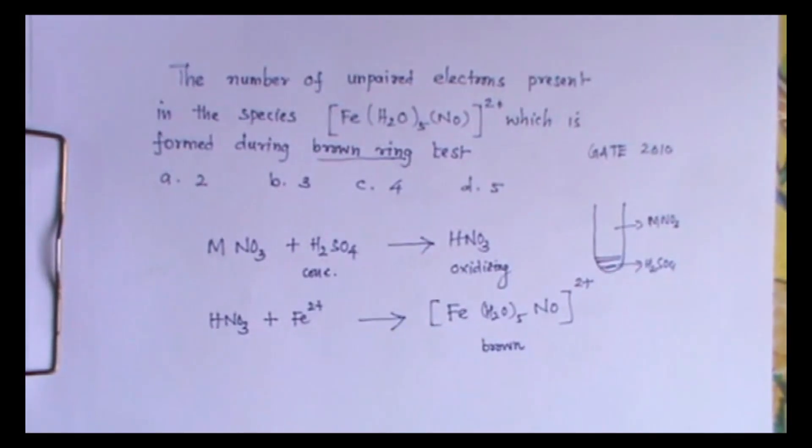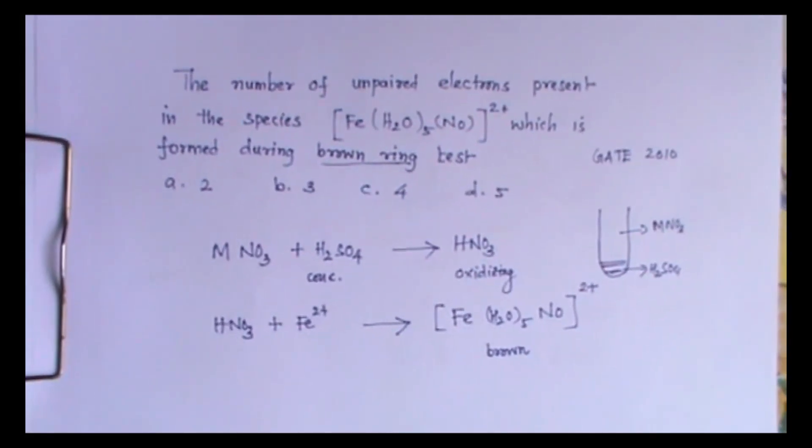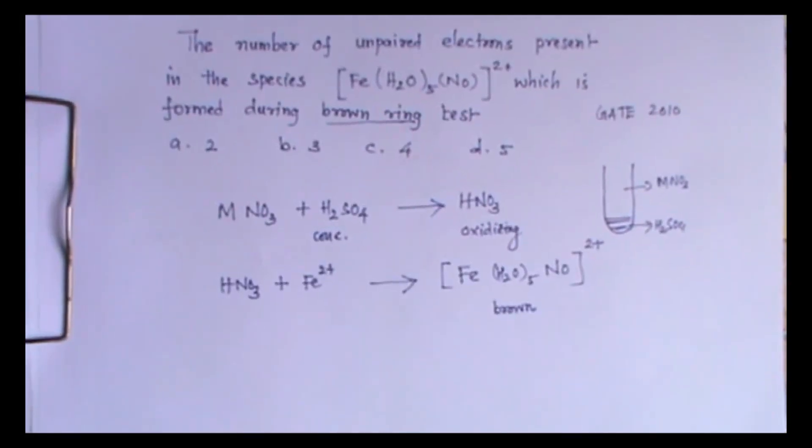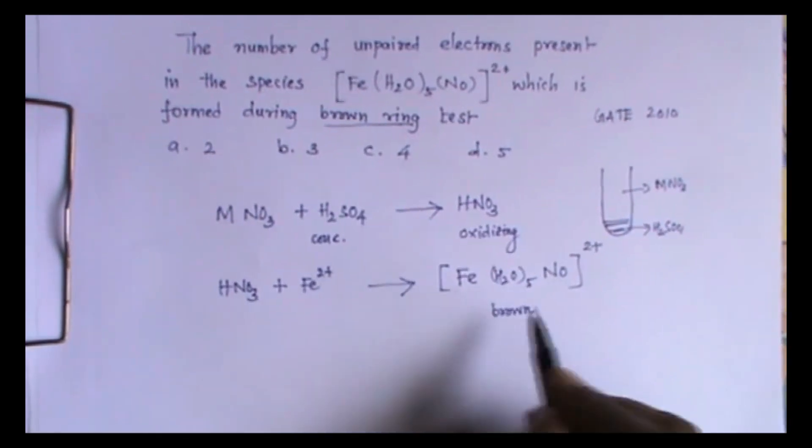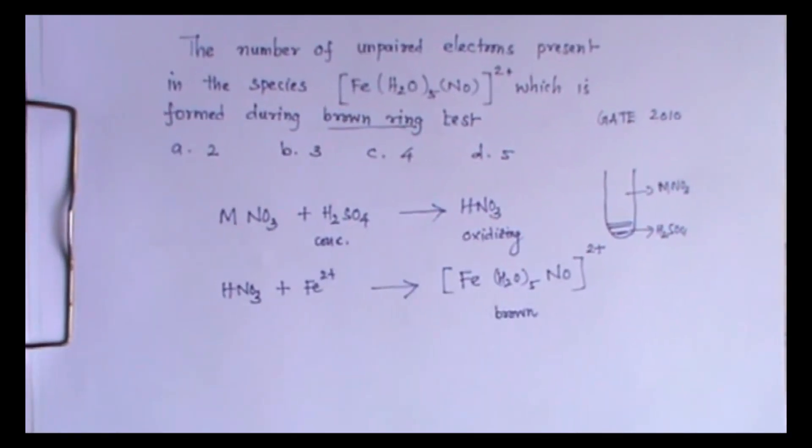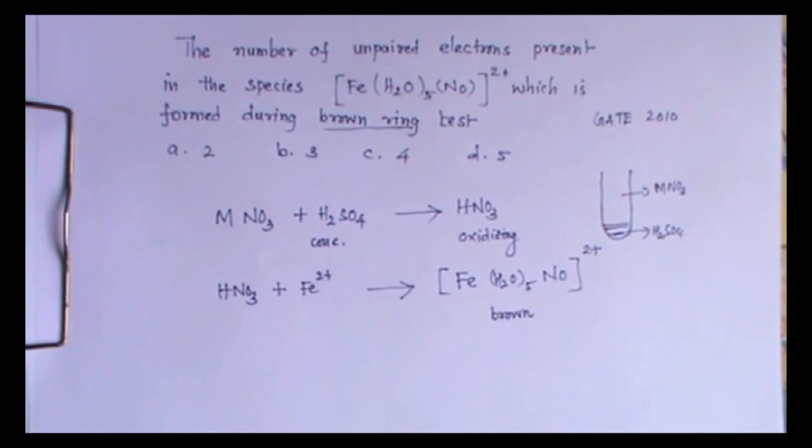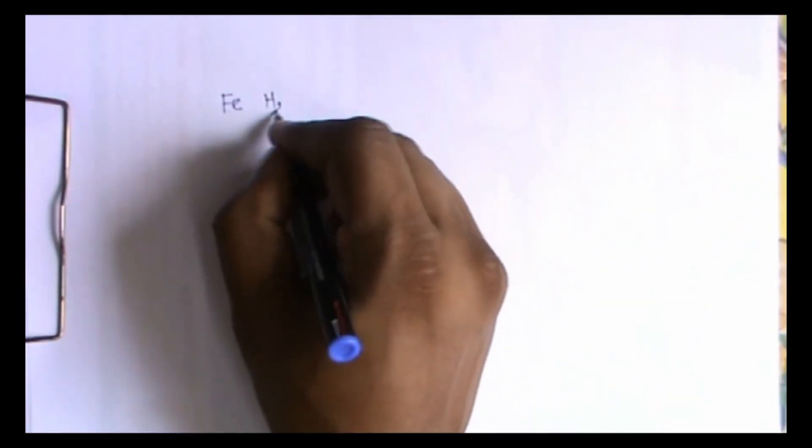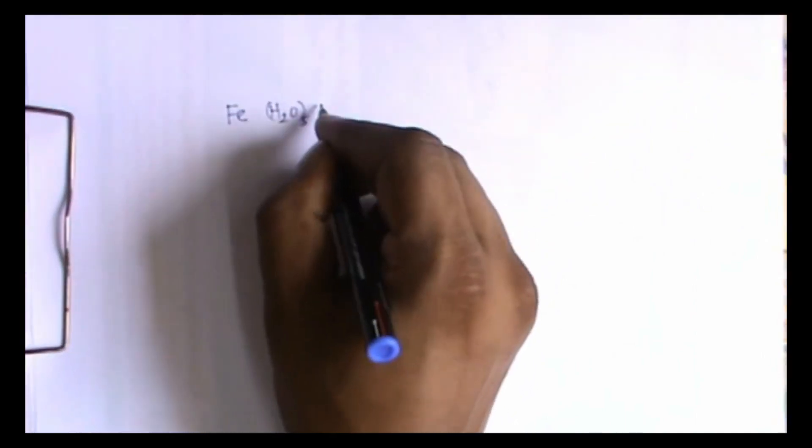Now we have to find out the oxidation state of iron in this species. Based on that we have to find out how many unpaired electrons will be there. The given species is [Fe(H2O)5NO]2+.